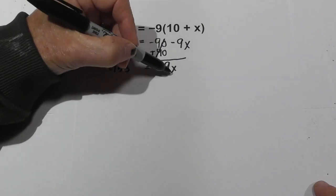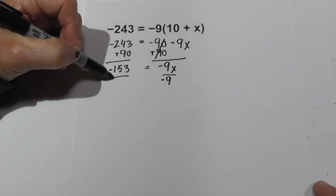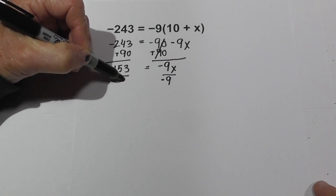So it would be just like 243 minus 90 but it's a negative. Now what we need to do is isolate the x so we can divide both sides by 9.